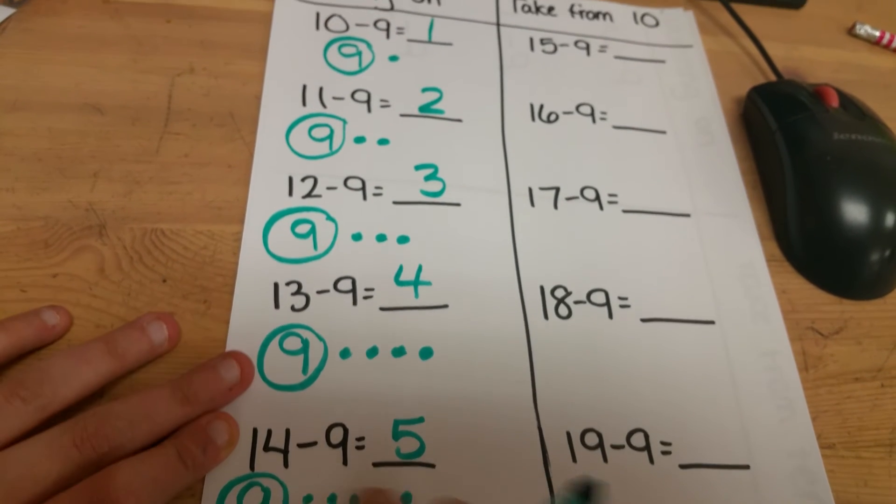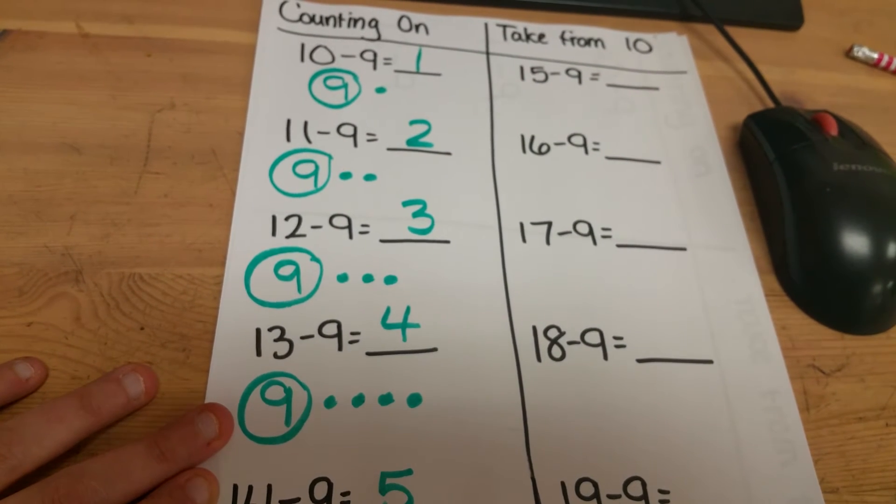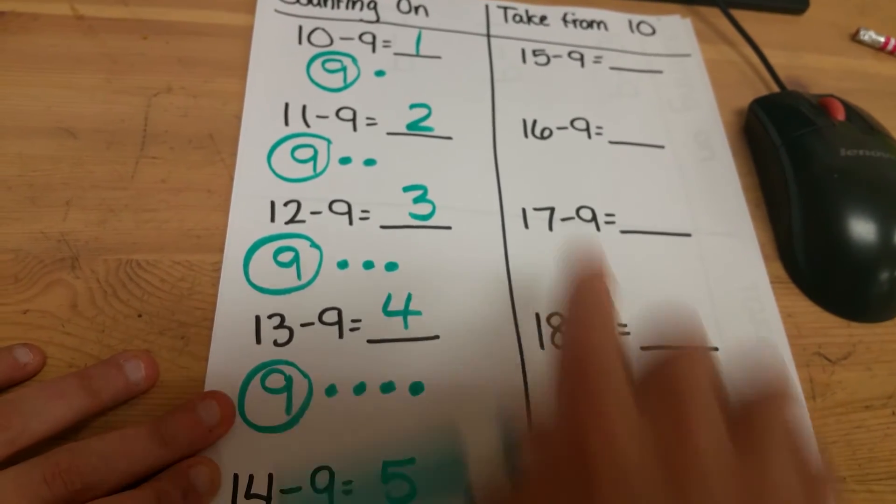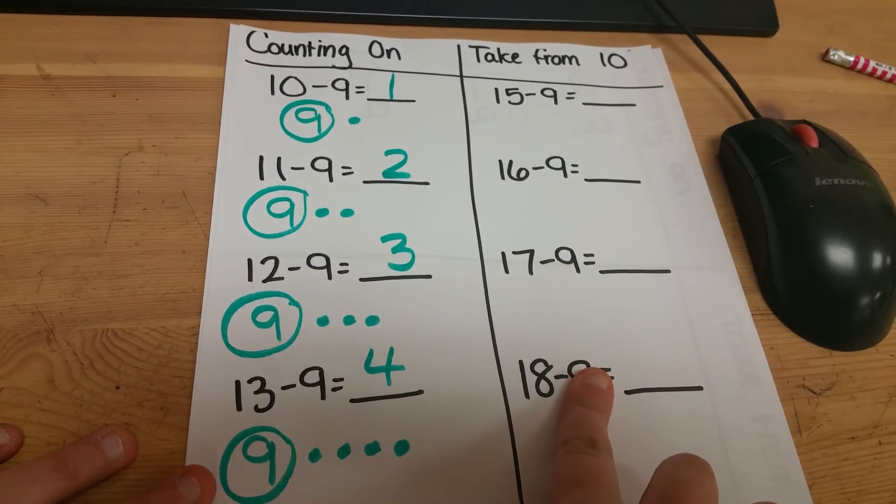After that, you start drawing so many dots that you can't quickly see the answer. You'd have to count all those dots and draw all those dots. So it becomes more efficient to take from 10.